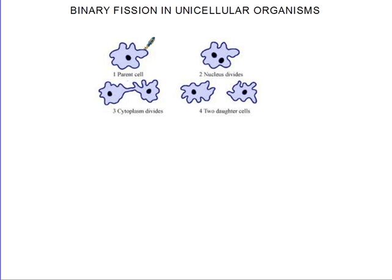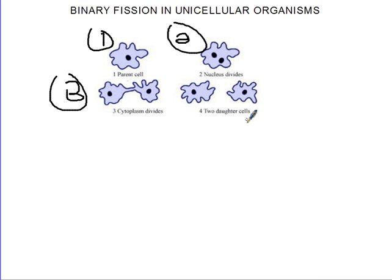For binary fission, this is how it looks. We have one parent cell. In step one, the nucleus of the parent divides. In step two, the cytoplasm will divide. In step three, the parent splits, and in step four, two daughter cells are produced. The parent no longer exists but two daughter cells now exist. So: first, the parent; second, a parent with two nuclei; third, the parent splitting into two; and fourth, the two daughter cells now exist independently.